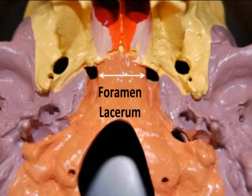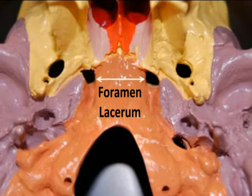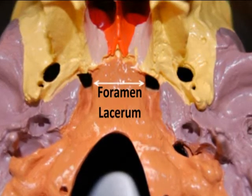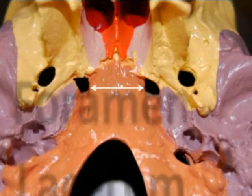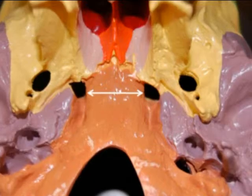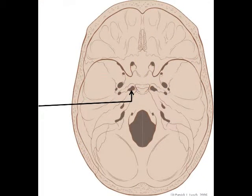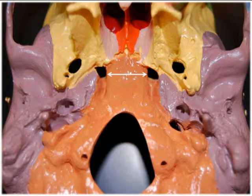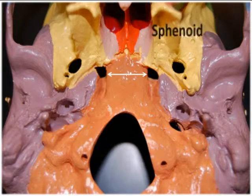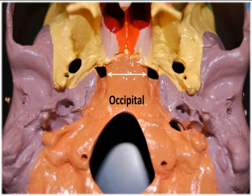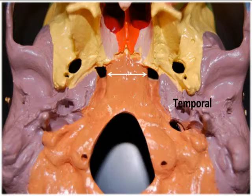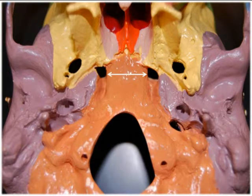Our last foramen is the foramen lacerum, and this is not a round hole or an oval opening — it is more of a slash or a tear. Lacerum is a reference to its lacerated appearance. This foramen is sandwiched in between the sphenoid, occipital, and temporal bones, and it allows passage of one of the branches of the ascending pharyngeal artery.